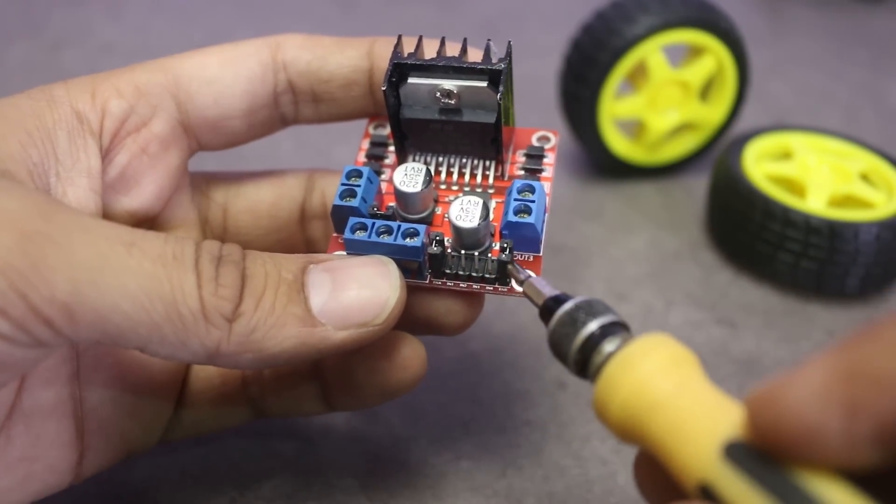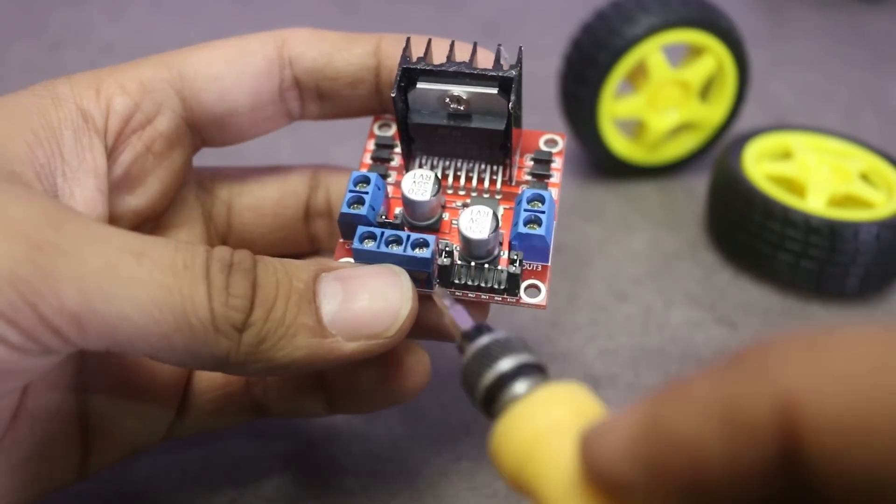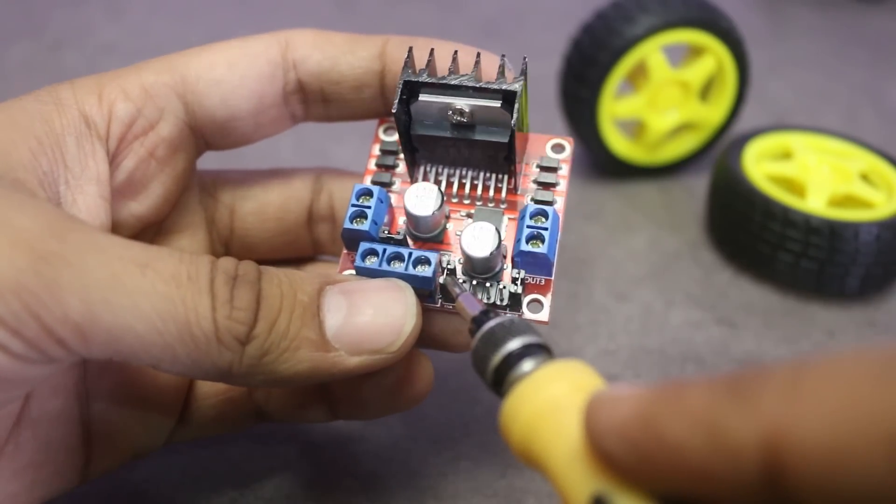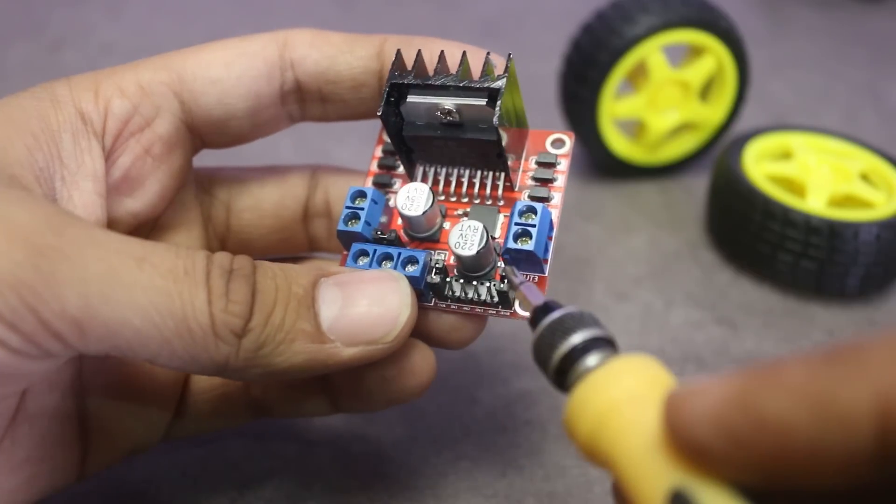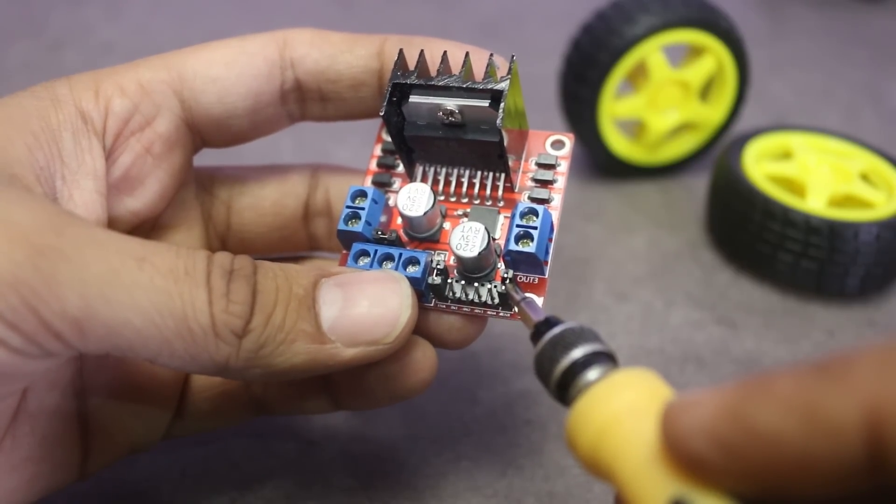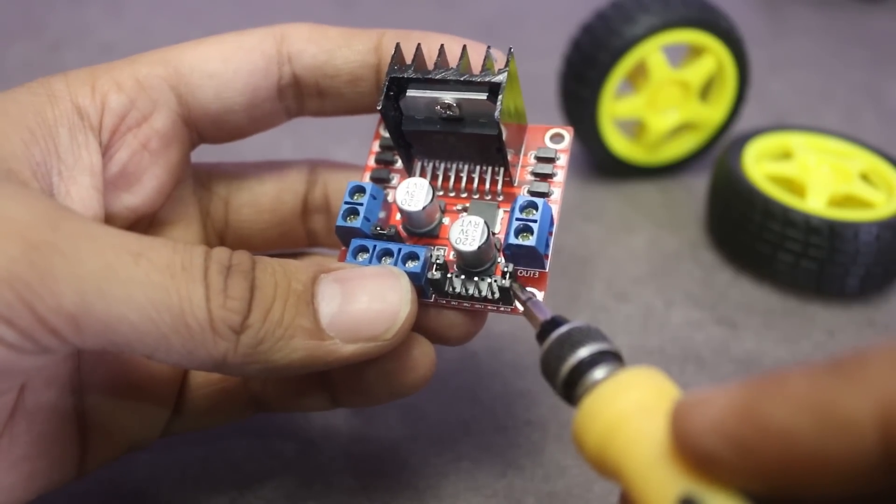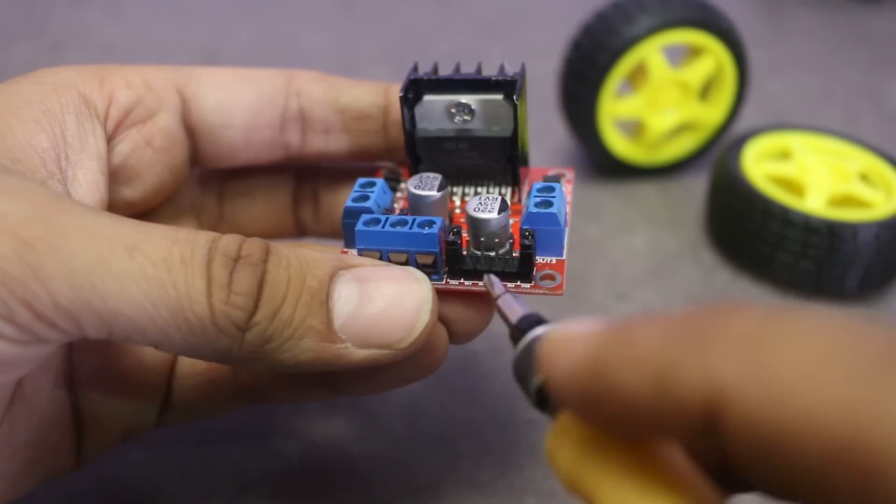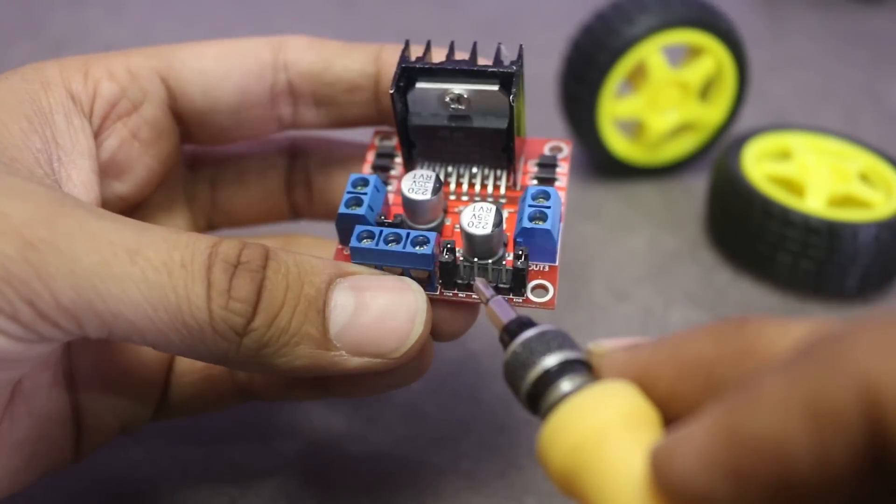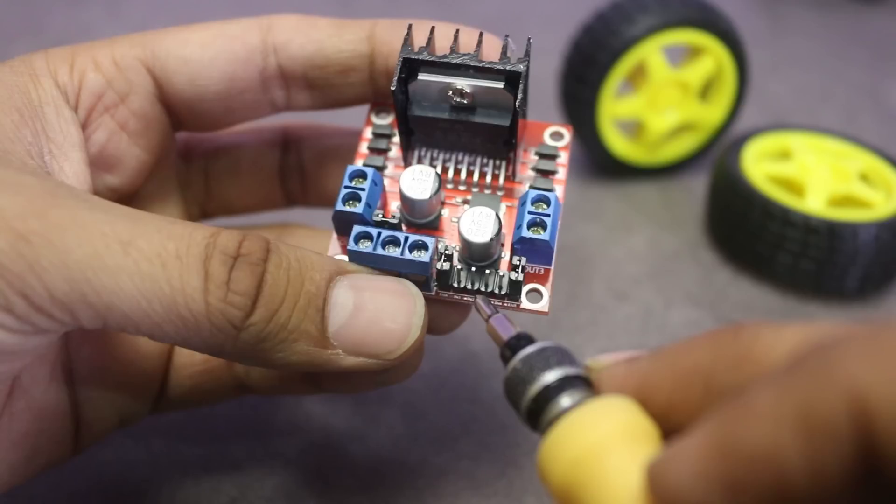Okay, here are some pins which are used to control speed and direction of the motors. These two jumpers are used to enable motors. If you are using a stepper motor or don't want to control speed of DC motor, then keep these jumpers. If you want to control the speed of DC motors, then remove them and connect with PWM output of microcontroller.